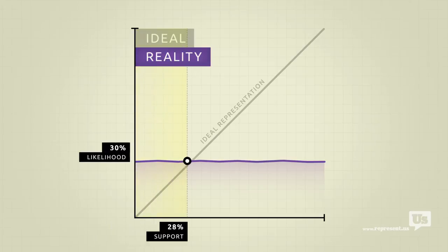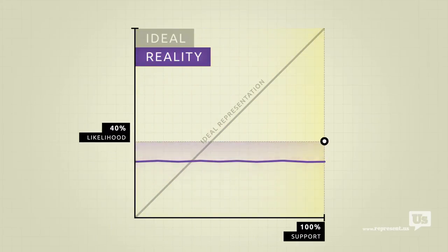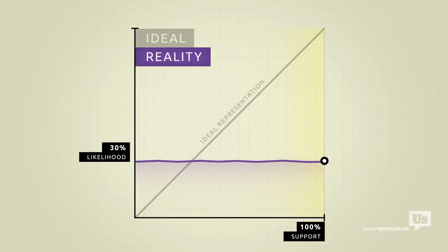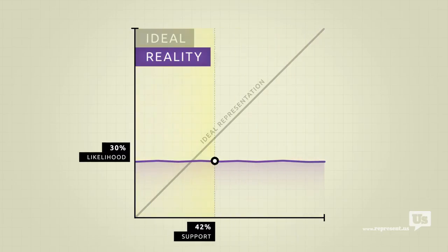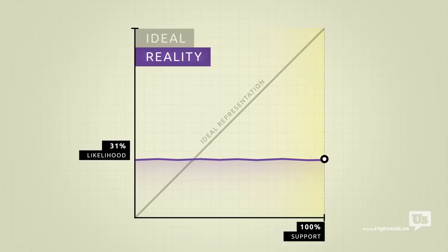Now, take an incredibly popular idea, the most popular idea this country has ever seen, and there's also about a 30% chance of it becoming law. This means that the number of American voters, for or against any idea, has no impact on the likelihood that Congress will make it law.